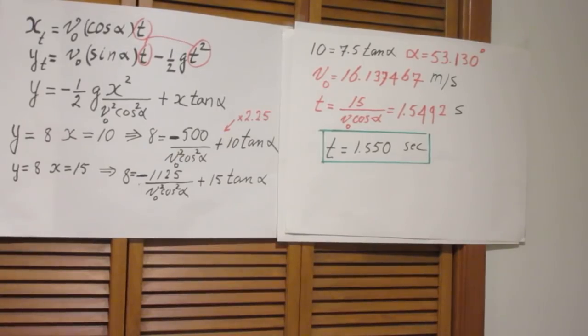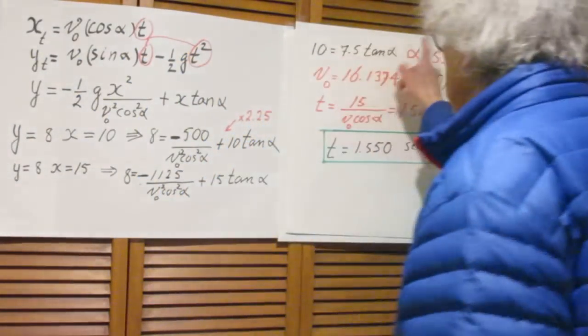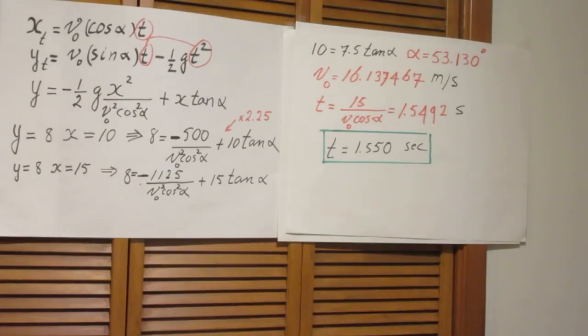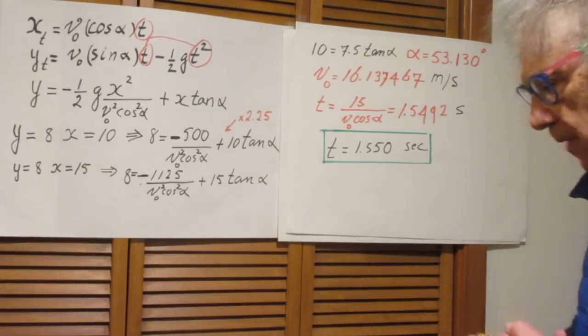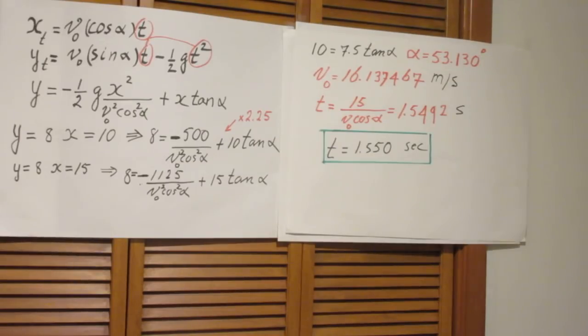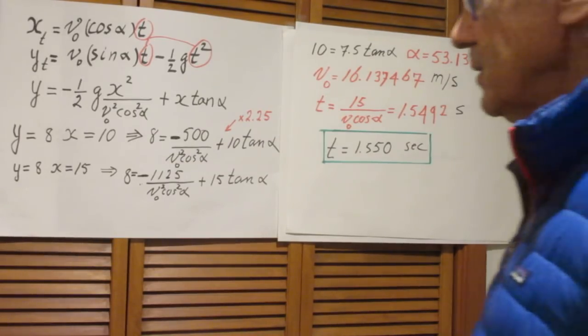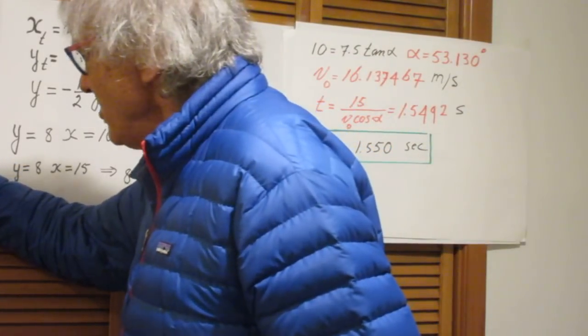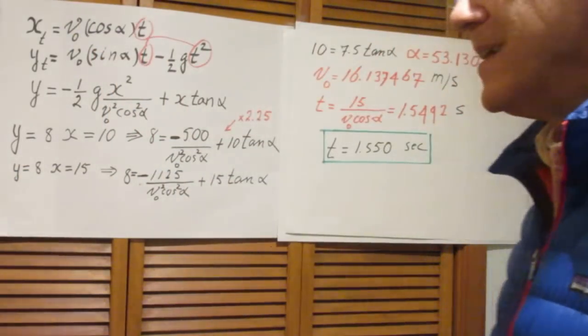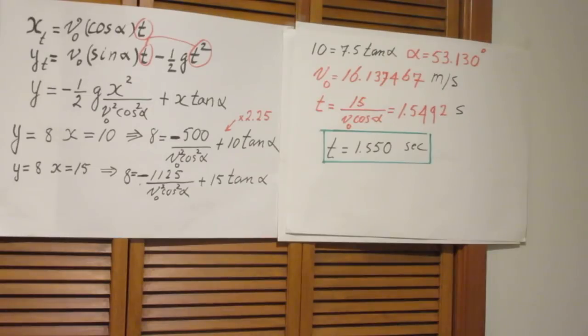So look at that result. You get 10 equals 7.5 tangent alpha. And that leads to a value of alpha of 53.130 degrees. So that is when it just is at the edge of that roof.